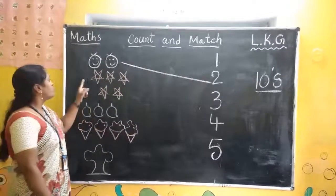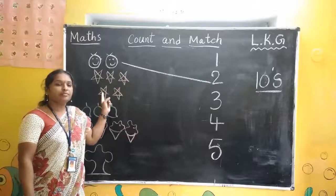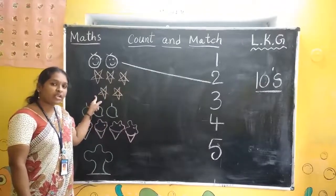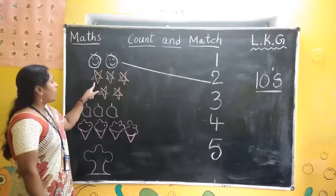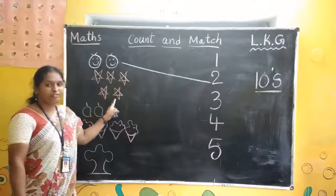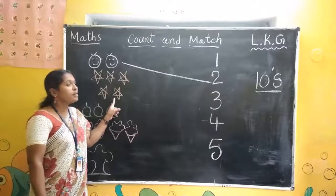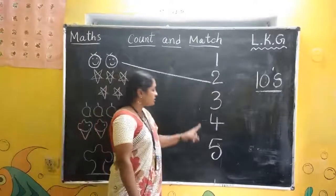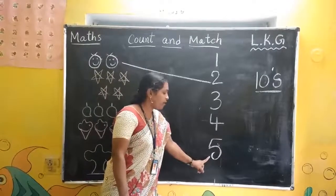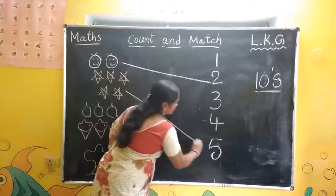What are these, children? Stars. These are stars. How many stars are there? One, two, three, four, five. Five stars are there. Where is number five? Come and search. Here. Number five — five stars. Come and match this, children.